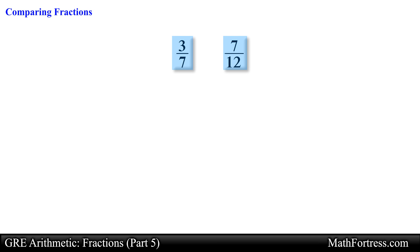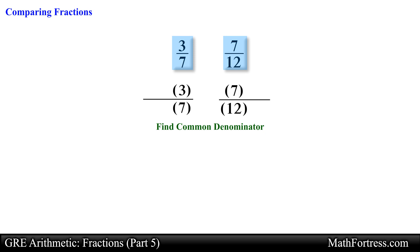Say we are asked to compare the following two fractions: 3/7 and 7/12. In order to make a comparison of two or more fractions we need to rewrite both fractions so that they have a common denominator, similar to the way we added and subtracted fractions, so we essentially need to find a common multiple of 7 and 12. The quickest way to find a common multiple is by multiplying the denominators together — in this case 7 times 12 which is equal to 84.